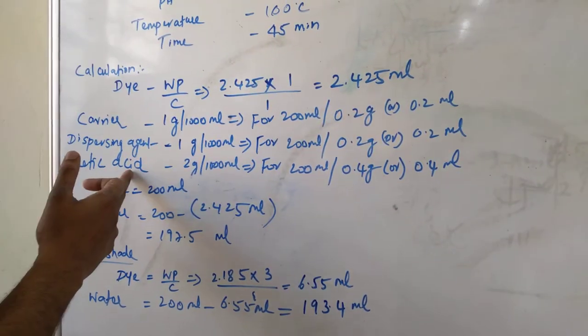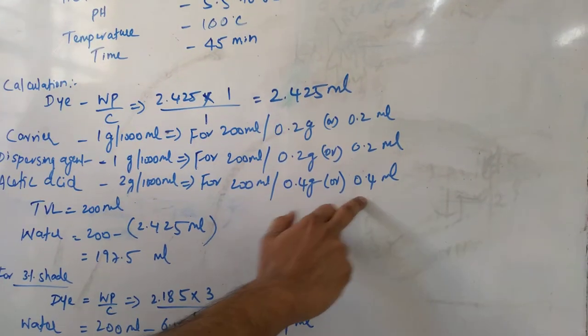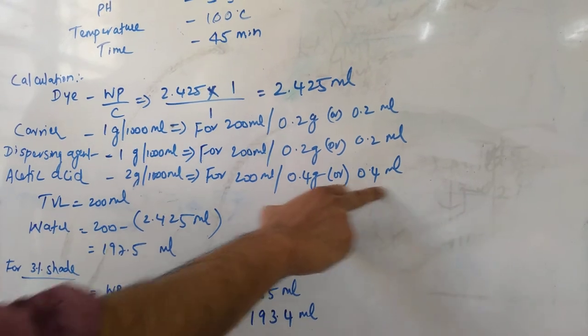So here acetic acid is taken a little more, that is 2 grams per liter. So accordingly, this will be around 0.4 ml for making the pH correction.